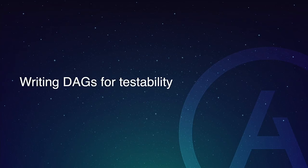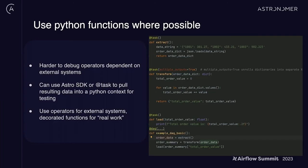Finally, a couple of quick tips on how to write your DAGs for easier testability. One big one: use Python functions when possible. Operators are great for dealing with complexity of external systems, but they're not as easy to debug when you're running into a problem. Whenever you can, think about whether you can do this in more Pythonic logic — that will allow you to easily write unit tests, easily set breakpoints, and make it easier to help your data engineers create their own operators where needed.